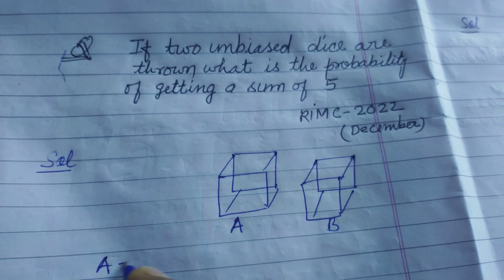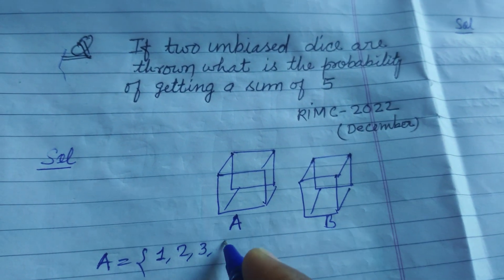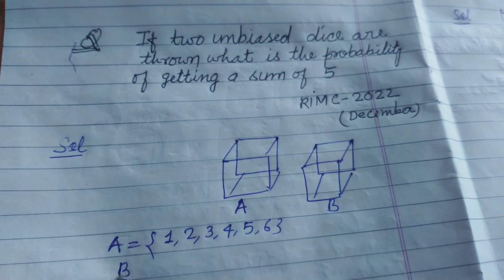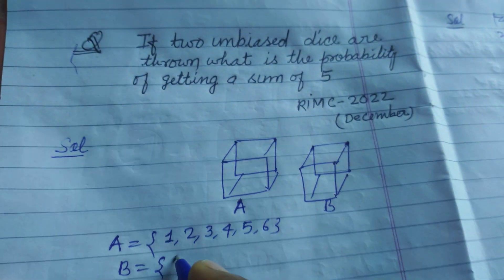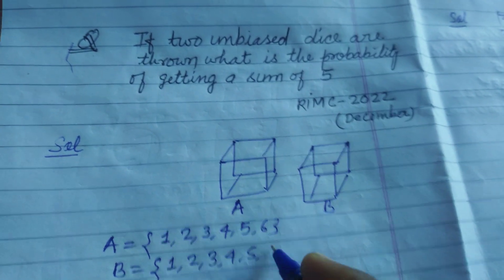So sample space of dice A is 1, 2, 3, 4, 5, and 6. And sample space of dice B is 1, 2, 3, 4, 5, 6.